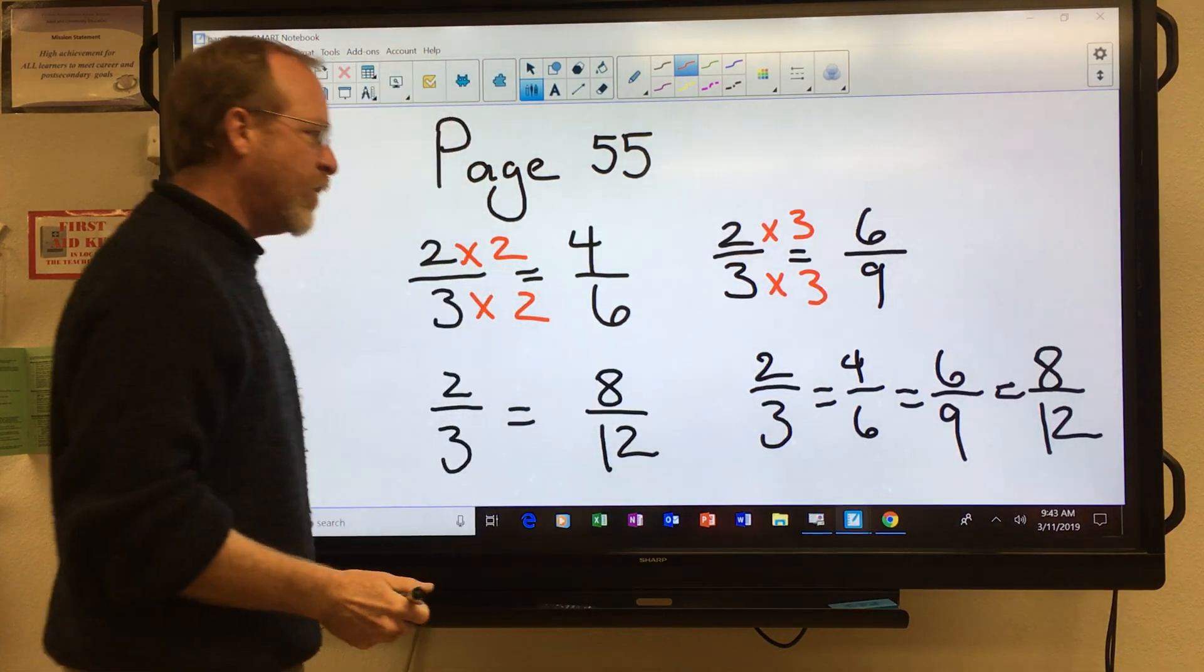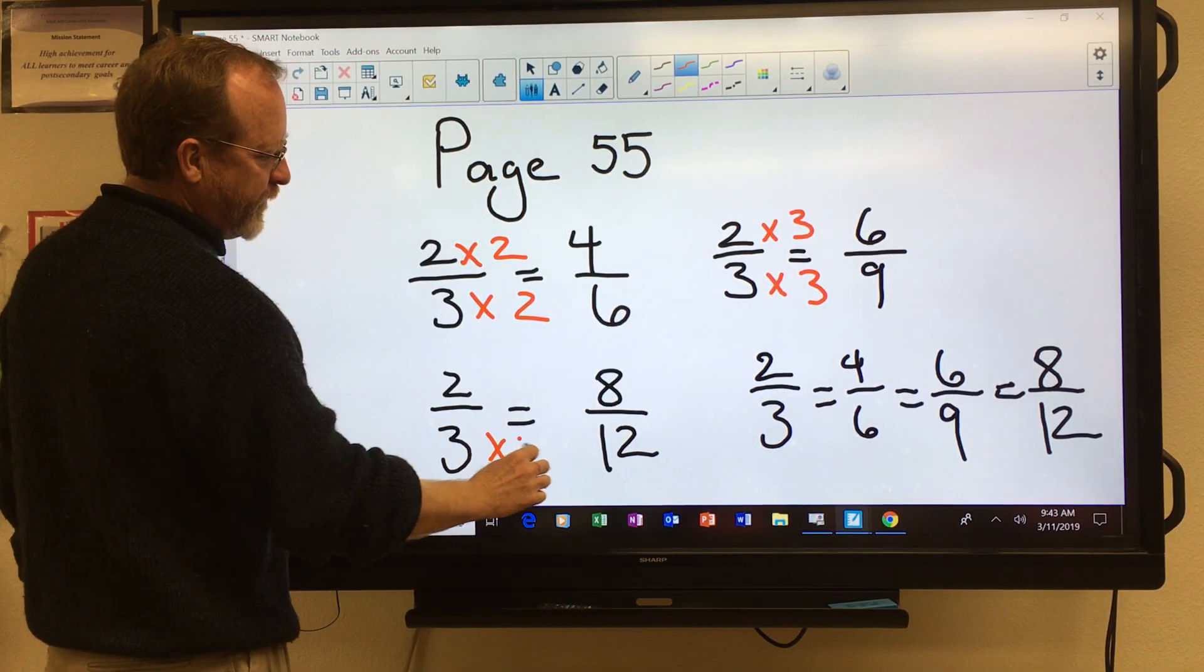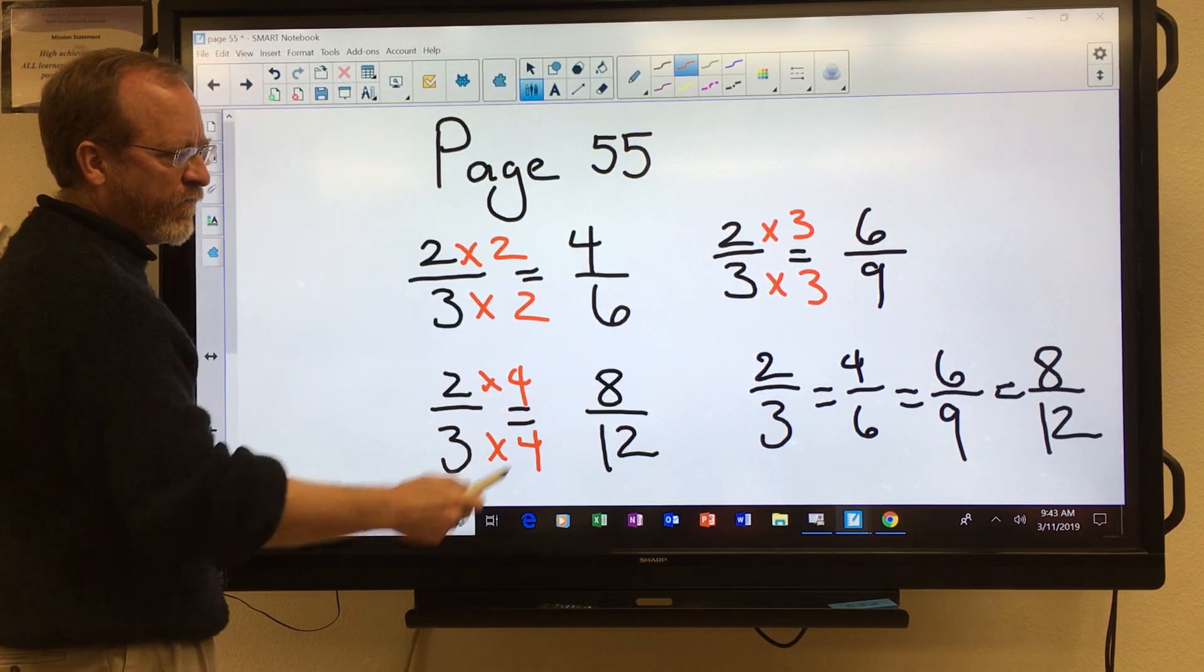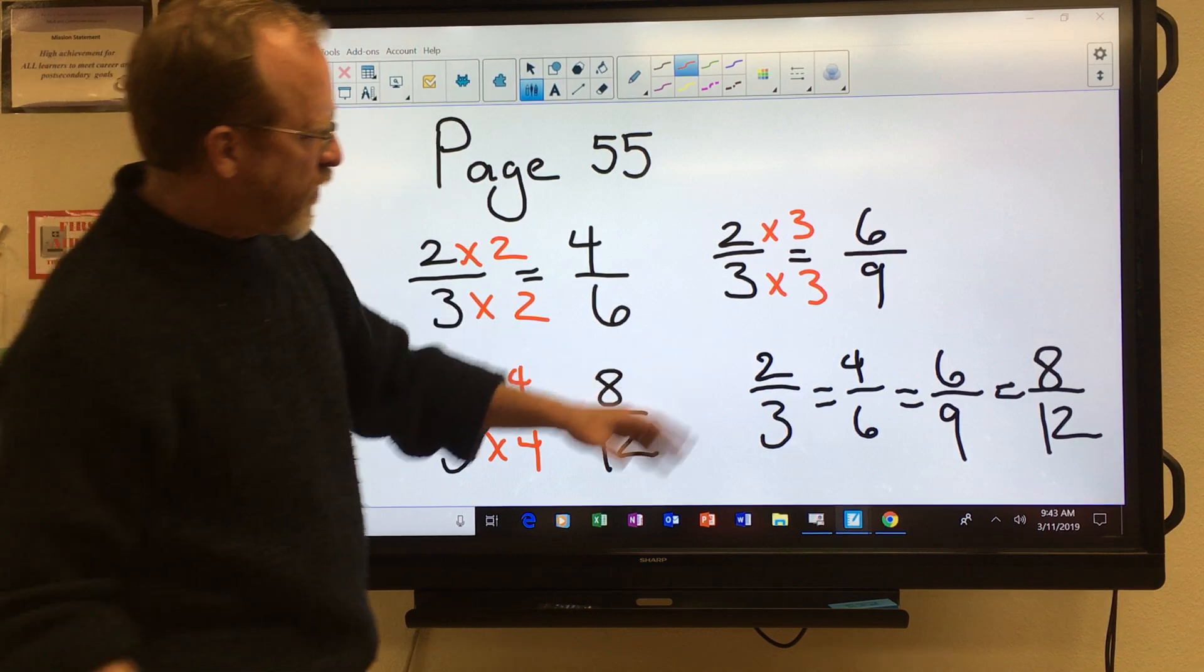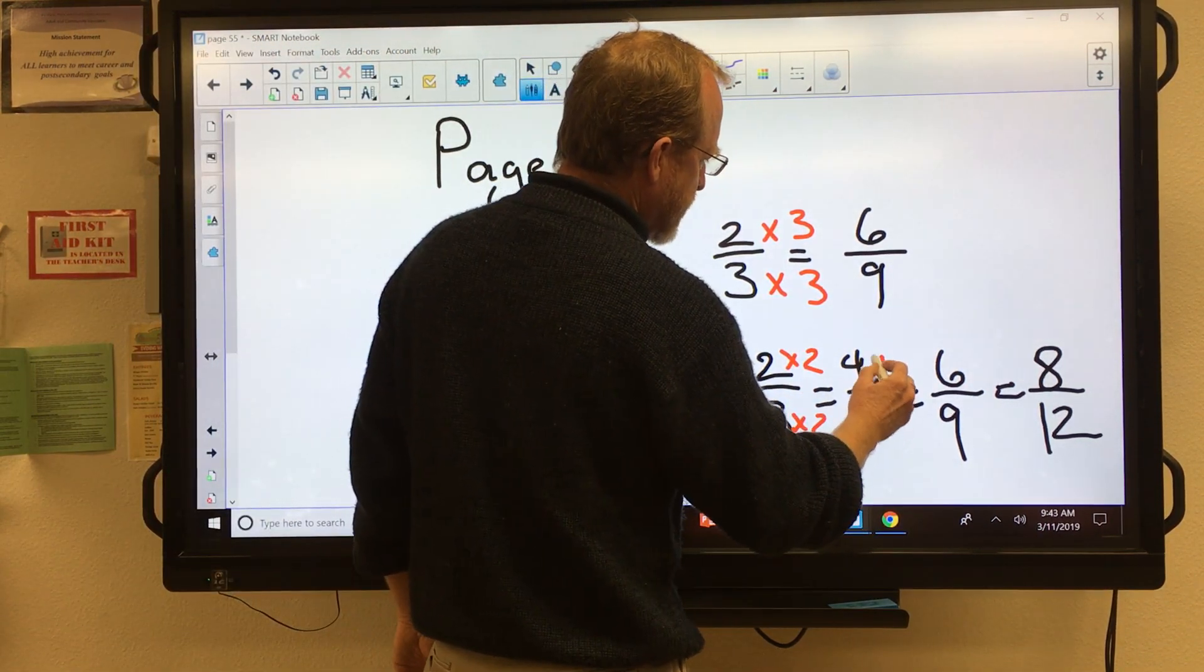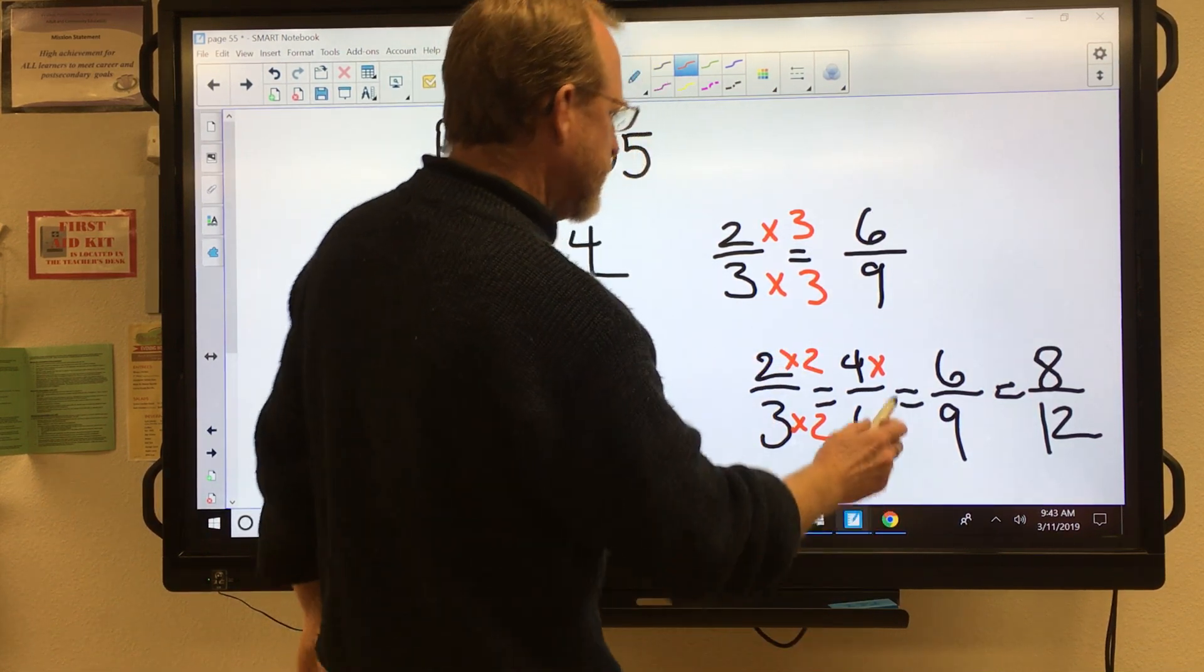And two thirds and six over nine are the same. They're equal. They're equivalent. Here, times four, times four, eight over twelve. And you can see the progression here. These fractions are going to wind up being the same.